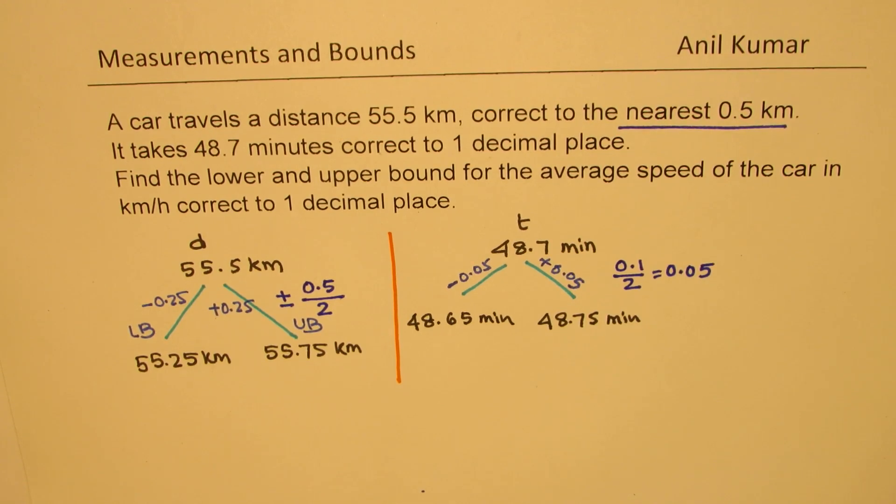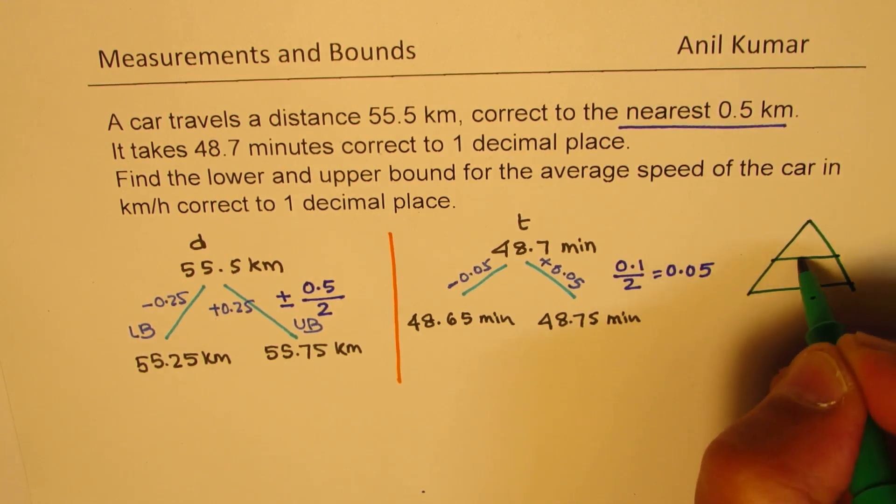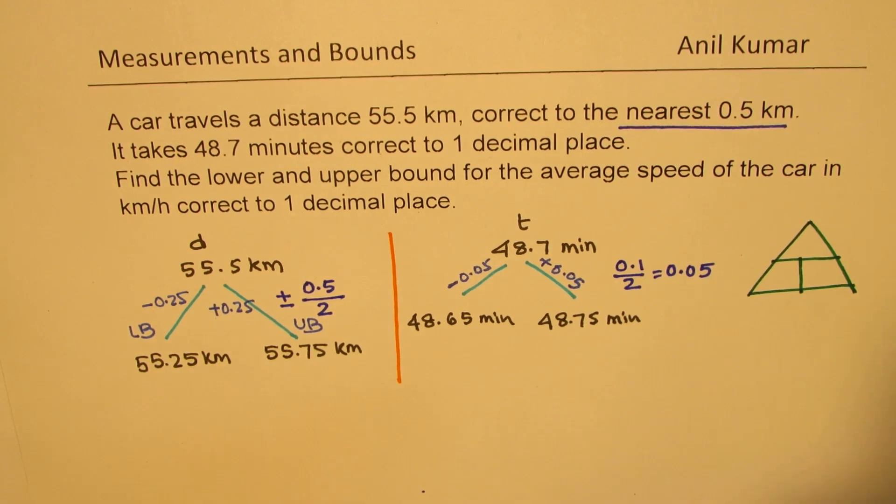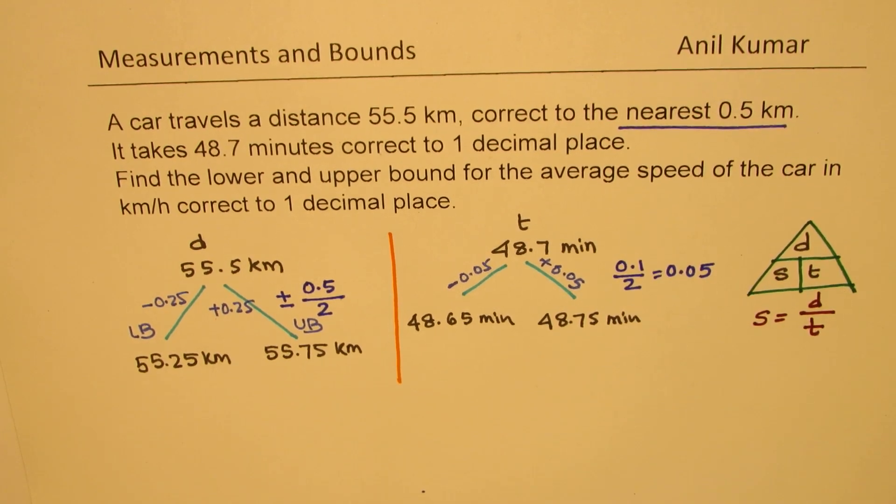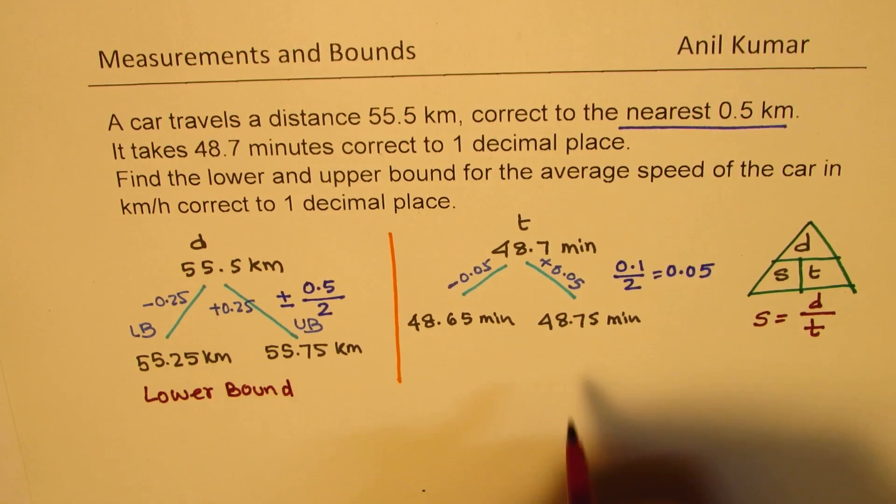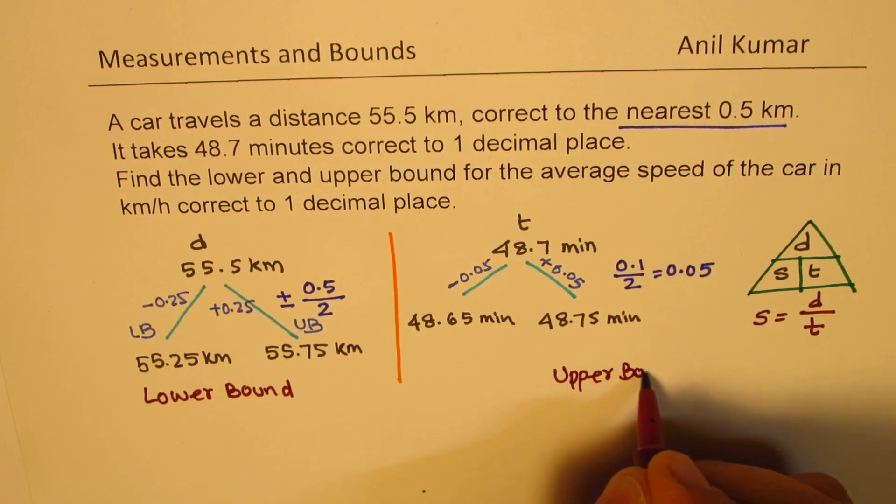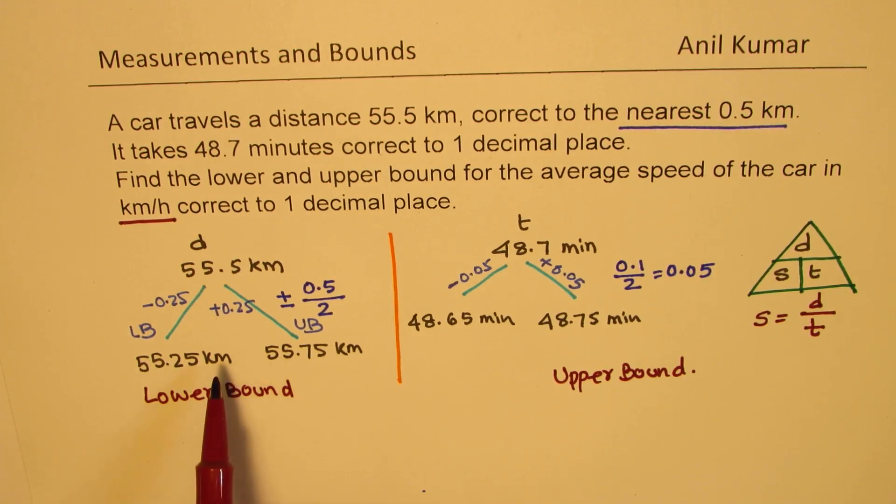Now, the idea is to find upper and lower bound of average speed. What is speed? Let's look into our triangle. We have distance, speed, and time related. Speed is equal to distance over time. When we want lower bound and the upper bound of the speed, how do we get them? And we also want it in kilometers per hour. Here, the units are kilometers per minute since the time is in minutes. So remember, we need to convert this to hours.